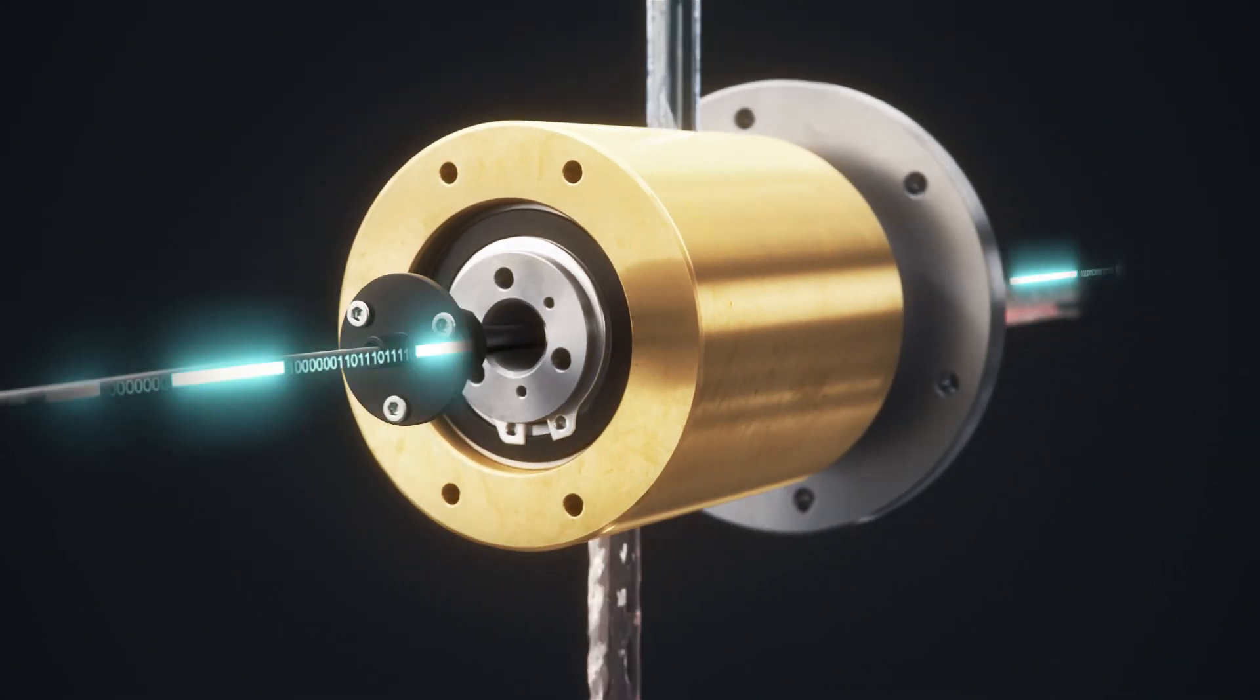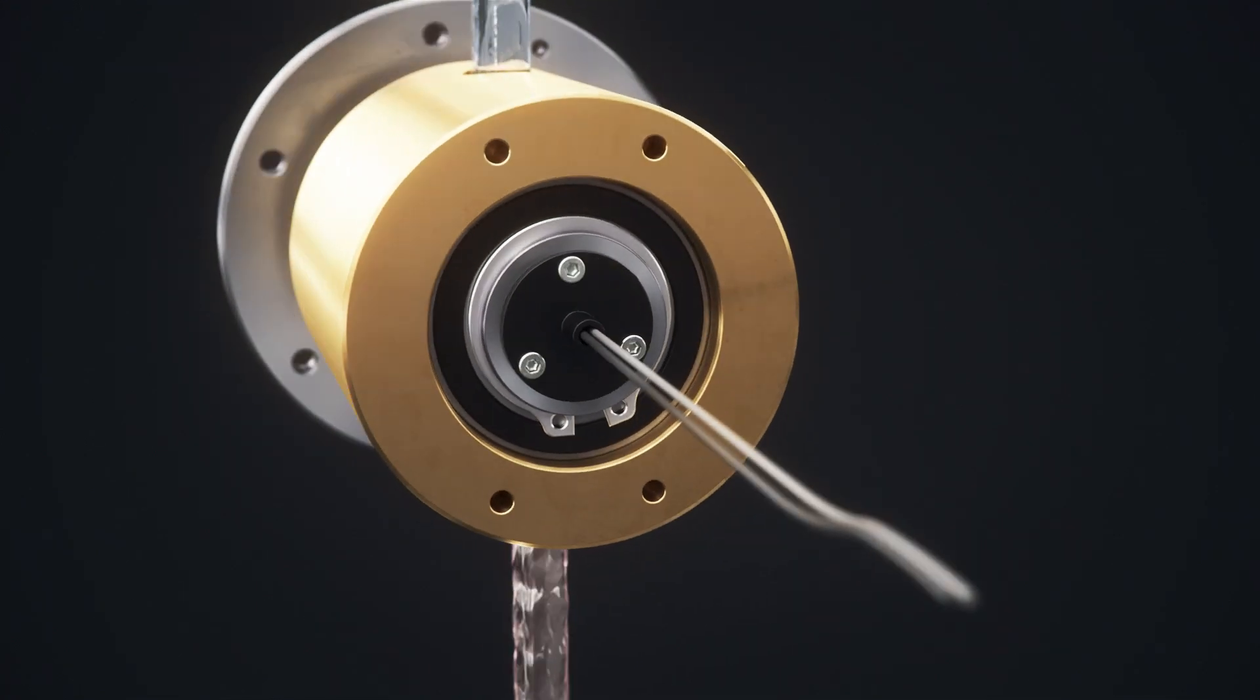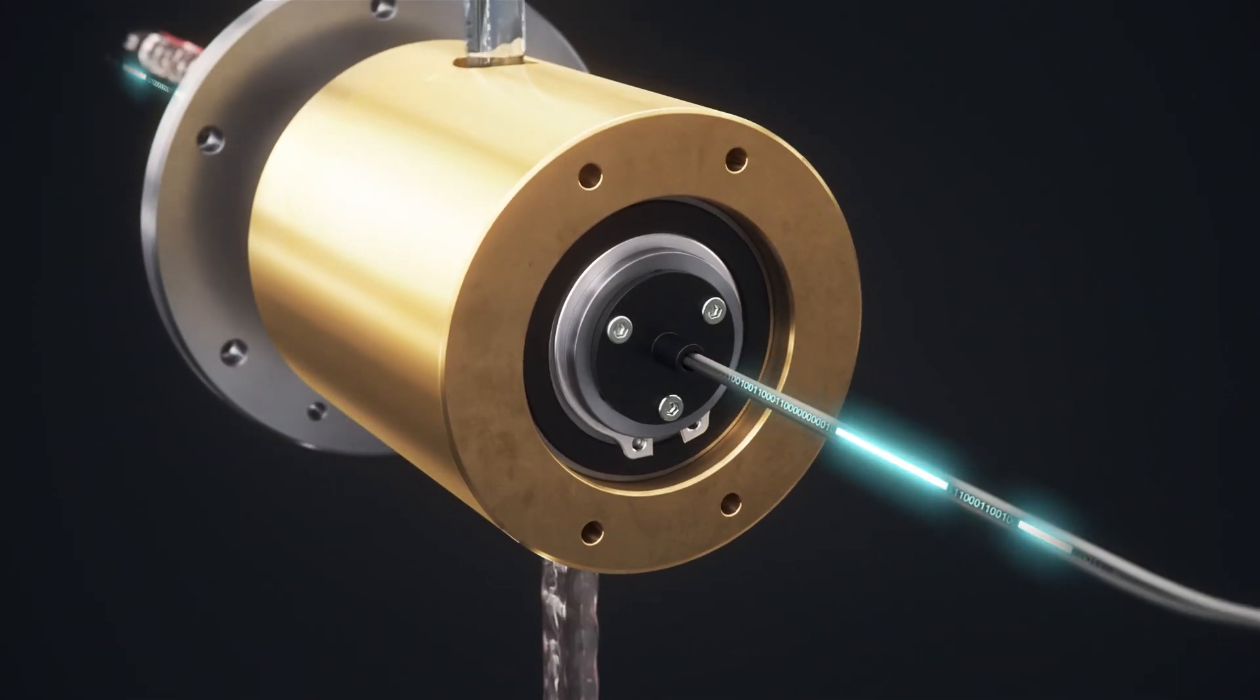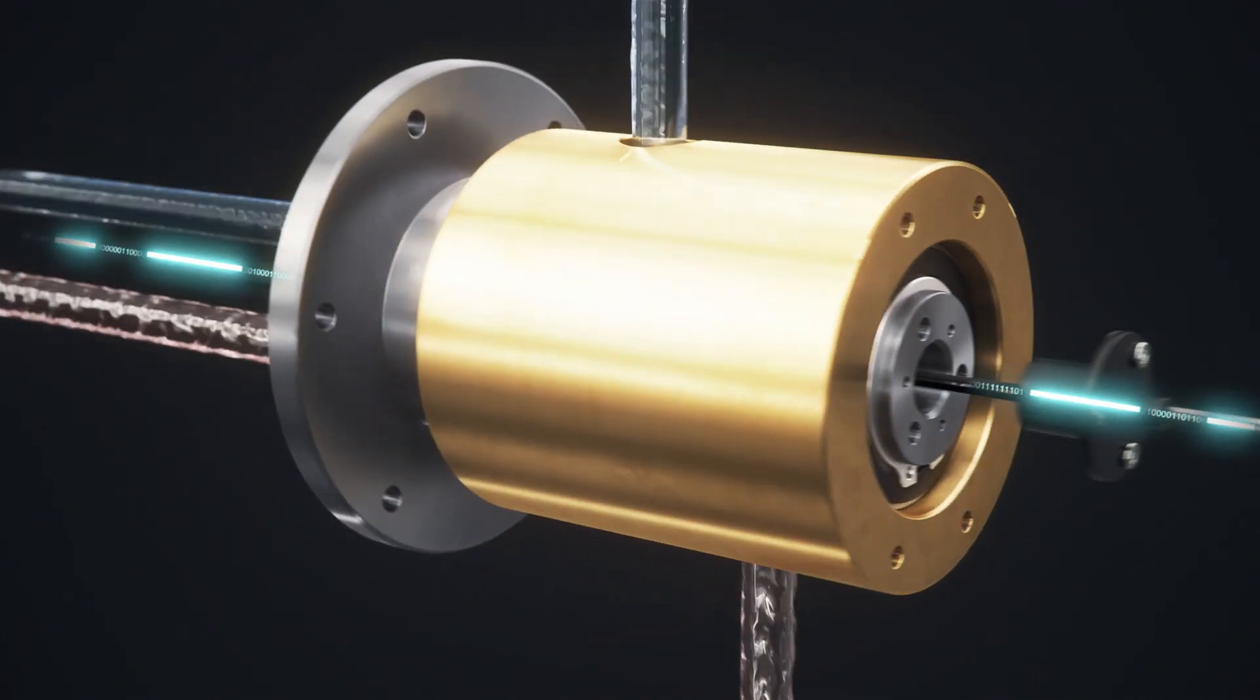When electrical power or data transfer must be combined with media transfer, multipass rotary unions integrate directly with electrical slip rings.